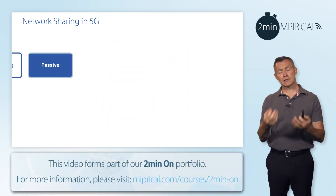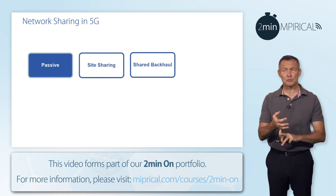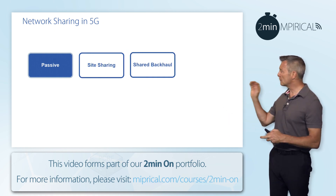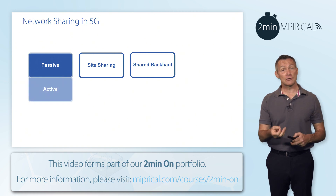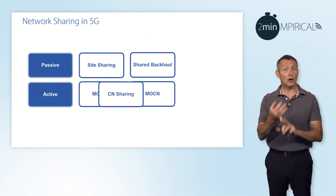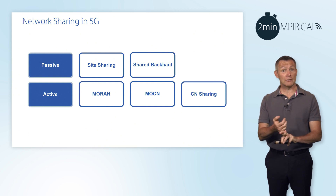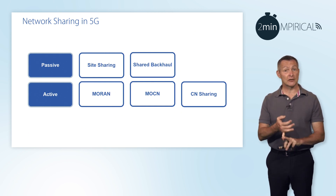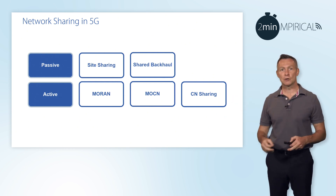In relation to those, we can have specific groupings. We can have a passive approach where we are sharing sites or backhaul. We can also have an active approach where we've got multi operators at the radio access network level. We can have multi operators at the core network level and we can also share that core network.